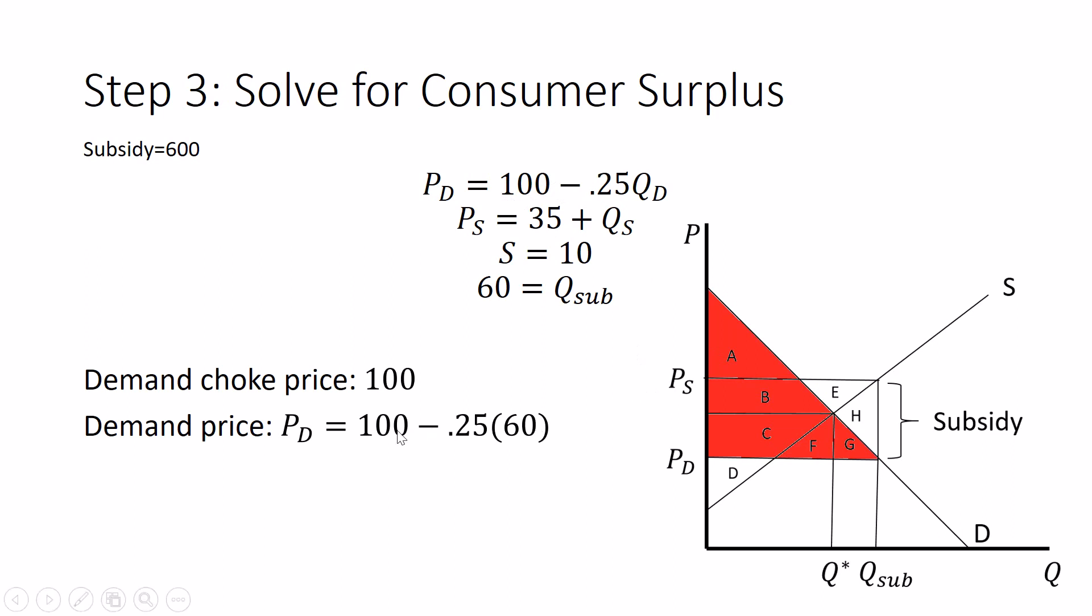The demand price, we're going to plug 60 into the price equation. 100 minus 0.25 times 60, that's 100 minus 15, equals 85. That is the demand price, $85. That is what consumers will pay for each of these 60 units of the good. Consumer surplus is half times the base, 60, times the height, 100 minus 85. It goes from 100 at the choke price down to 85 at the demand price, equals $450. We got consumer surplus. Half times base times height. We had to solve for Q sub and for PD. Then it's just a triangle like we would always do in a simpler market.